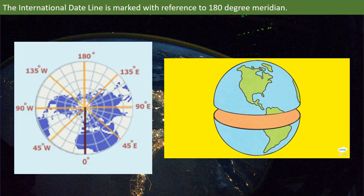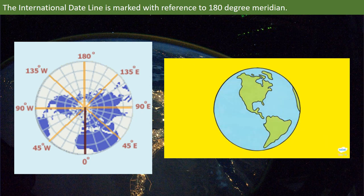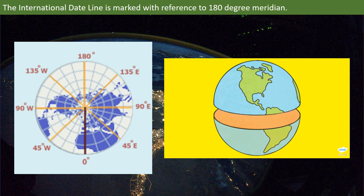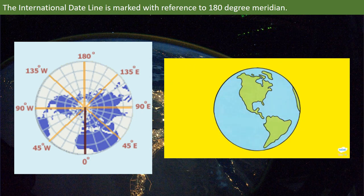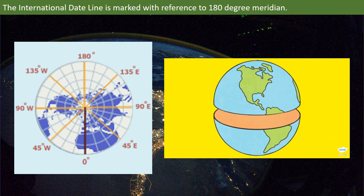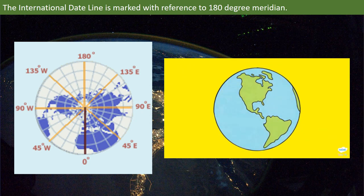The international date line is an imaginary line between the most northern and southern points on the Earth that goes through the Pacific Ocean. When you cross the international date line, the day and date changes. The international date line is marked with reference to 180 degree. The 180 degree meridian lies opposite to the prime meridian.